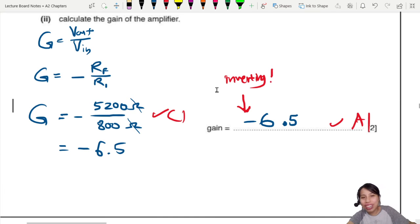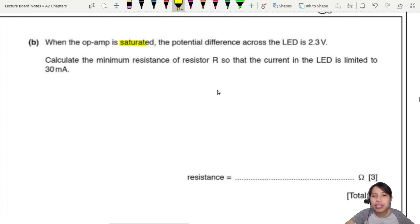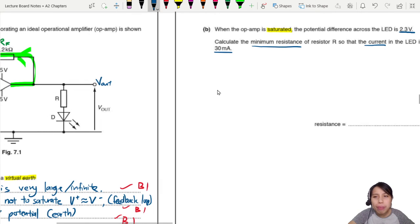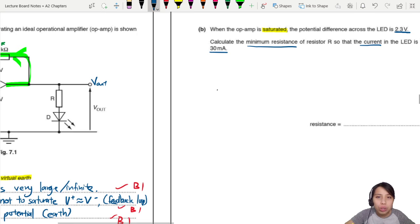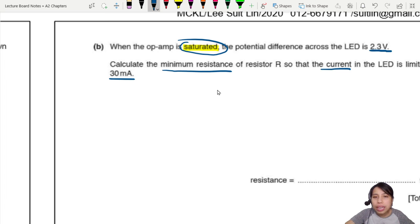The last part of this question is really tricky. When the op-amp is saturated, the potential difference across the LED is 2.3 volts. Calculate the minimum resistance of resistor R so that the current in the LED is limited to 30 milliamps. The LED is 2.3 volts and they're asking what is the resistance R so that the current can only be 30 milliamps. This is tricky - how do I know which direction the current is flowing?